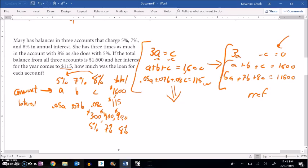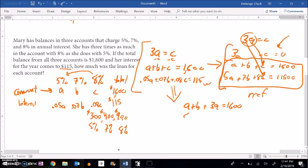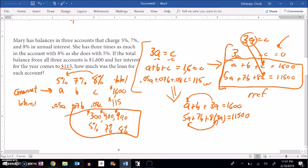So 3A equals C. I'm still going to use these two. But I know that 3A equals C. So that means I can replace every C with a 3A. So notice I've already eliminated one. So I would have A plus B plus 3A equals 1,600. 5A plus 7B plus 8 times 3A equals 11,500. And then I could just go from there. And then I just have a 2 by 2. I can combine some like terms with A's. And I still get these answers. Great.